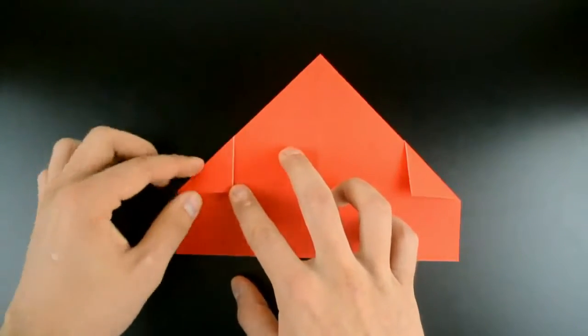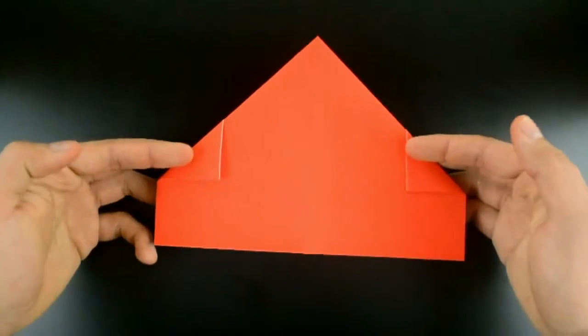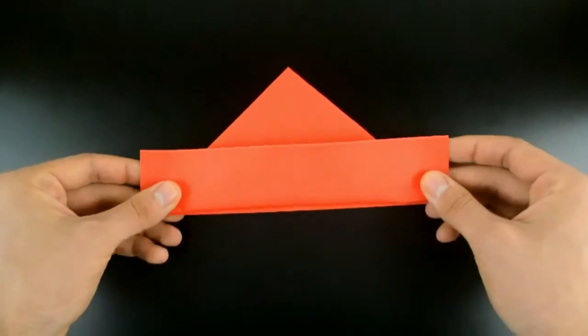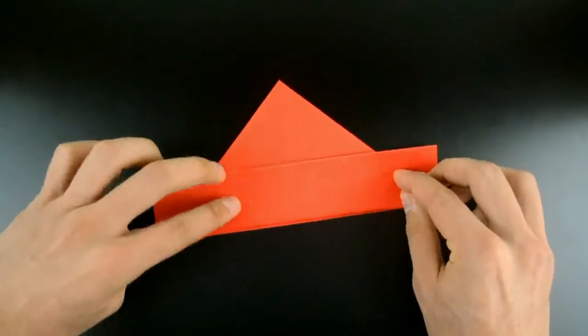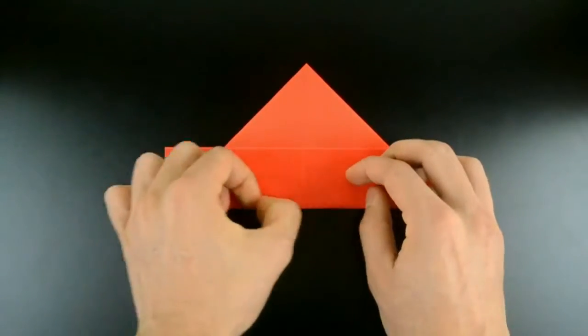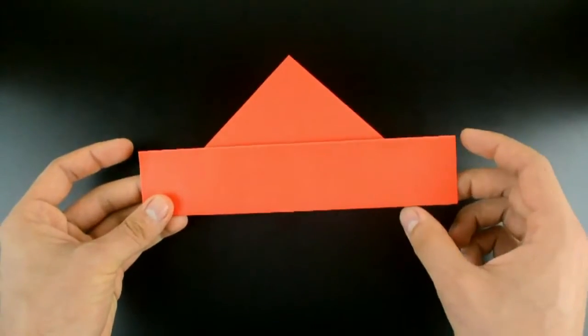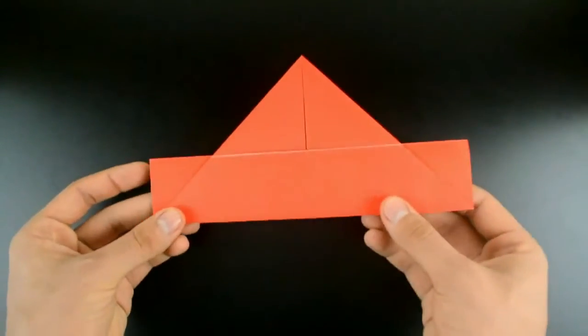Now on the other layer, just repeat the same step. First the bottom up, turn the paper over, and now both corners down.